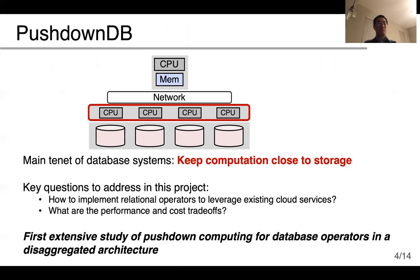PushdownDB targets this exact limitation of the disaggregation architecture. The design follows a main tenet of database systems, which is to keep computation close to storage. PushdownDB leverages computation near the cloud storage to push certain database operators down, significantly reducing network traffic and leading to performance improvement. The project addresses key questions: how to efficiently push computation down by leveraging existing cloud services, and what are the performance and cost trade-offs. To the best of our knowledge, this is the first extensive study of pushdown computing for database operators in a disaggregated architecture.